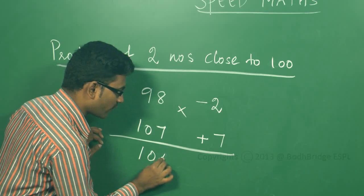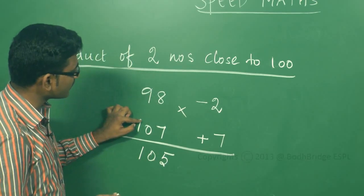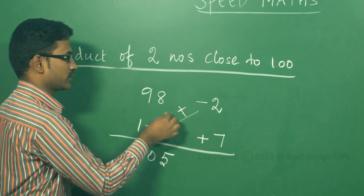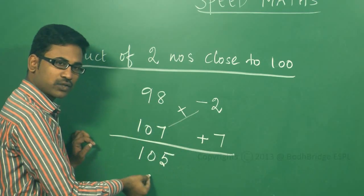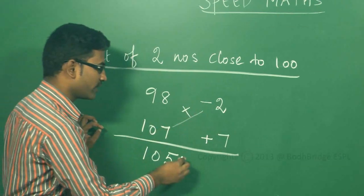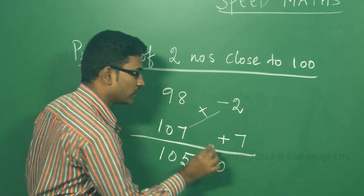So this 105 which is derived from 107 minus 2, this cross, 98 plus 7, again it is 105. It is close to 100. We already know we have to add two zeros.